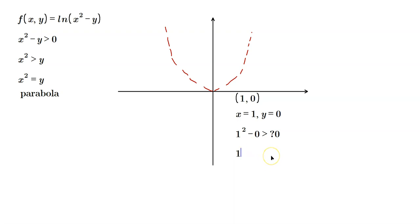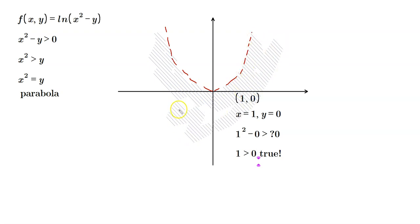Well, this is 1 greater than 0. That's certainly true, isn't it? This of course means that the region of interest is this region right here. It's the region around the parabola, to the right, to the left, below it, all of this. I'll just shade some of them, but you get the picture.